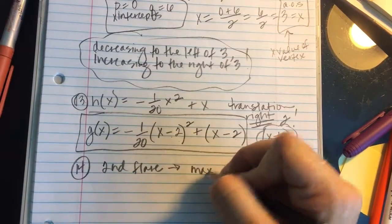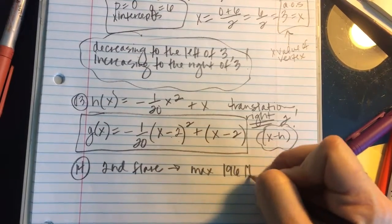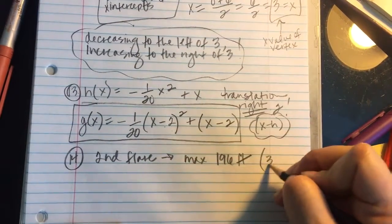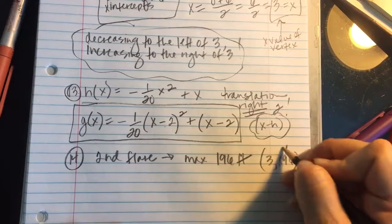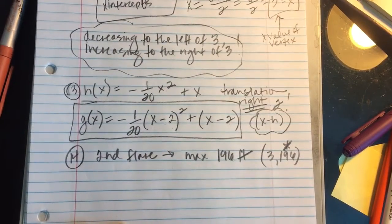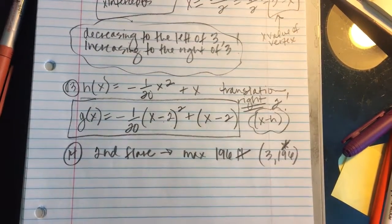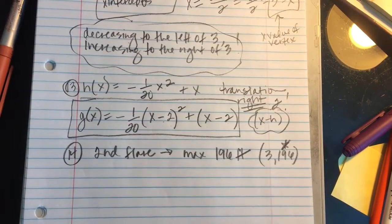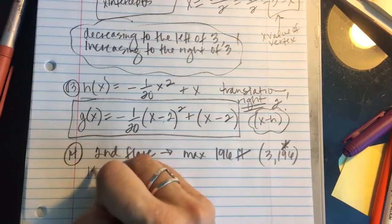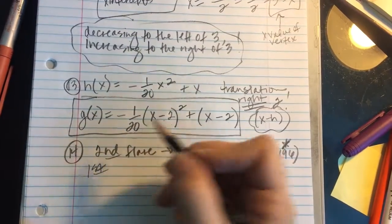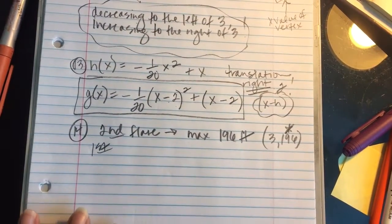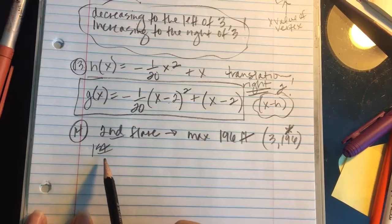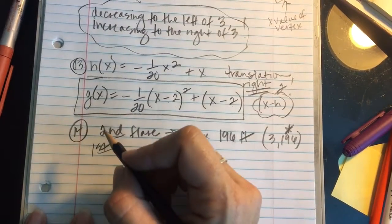And I know that because the vertex is given as (3, 196). The maximum is the y value. So the second flare's maximum value is right in the picture for us. At 3½ seconds, it hits 196 feet. I need to find out the first flare's maximum value. I need to find out the first flare's y value of the vertex in order to figure this one out.